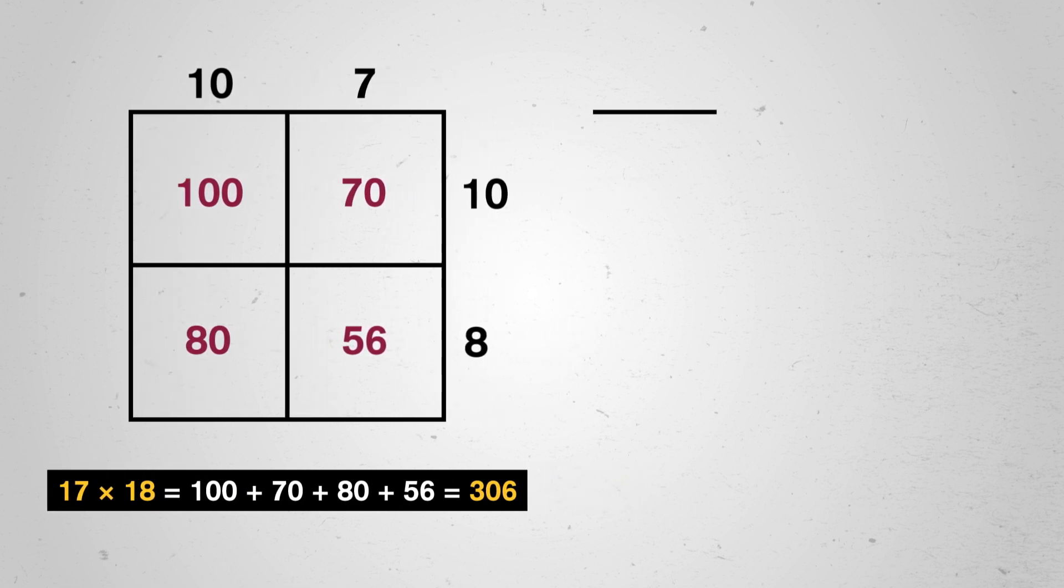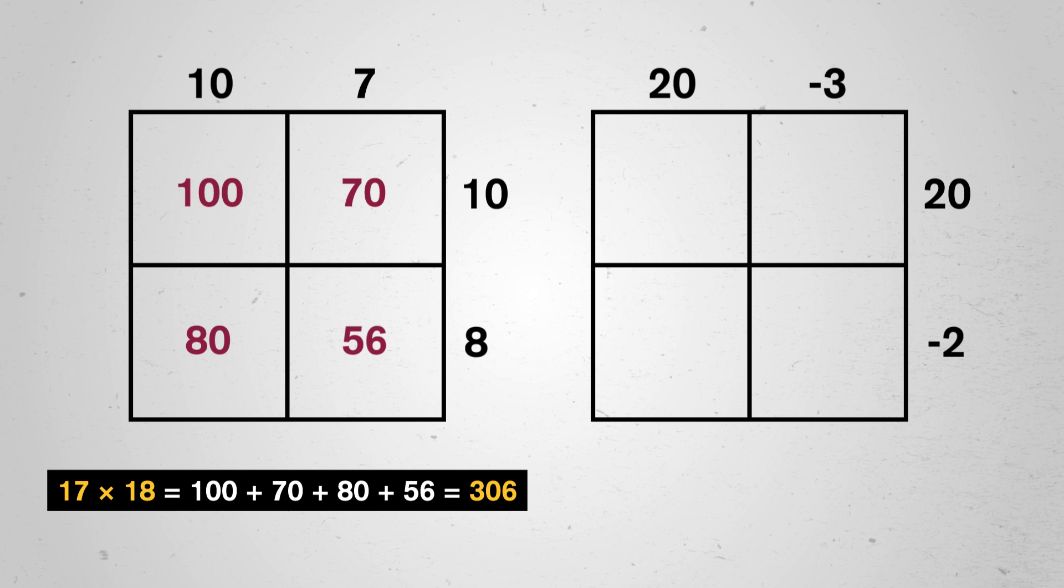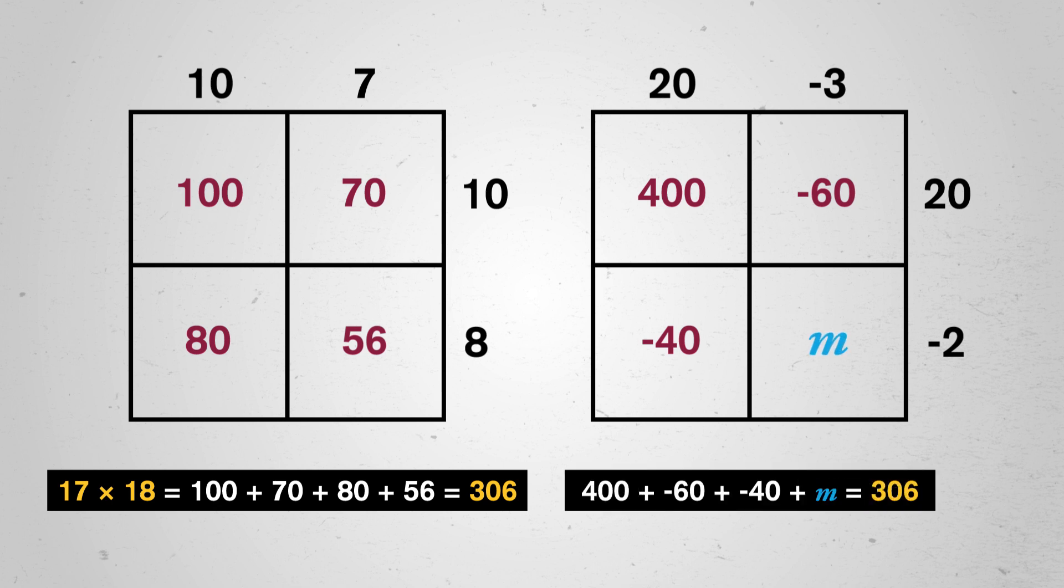Add all those up and you get 306. But what if we wrote 17 and 18 as 20 minus 3 and 20 minus 2? The size of the rectangle is still the same, 17 and 18, we just changed the way we wrote them. 20 times 20 is 400, 20 times negative 3 is negative 60, 20 times negative 2 is negative 40. And let's just leave that negative 2 times negative 3 a mystery for now. So 400 plus negative 60 plus negative 40 plus our mystery m must equal 306. Or 300 plus m equals 306. So the product of negative 2 and negative 3 has to be positive 6, because we never change the area just the way we wrote our numbers.